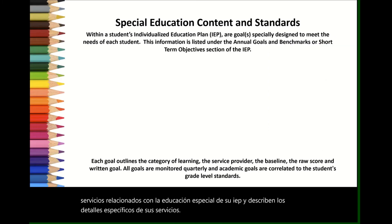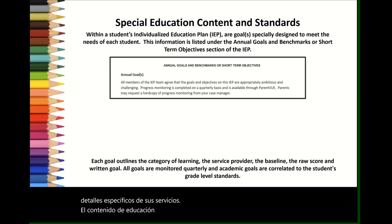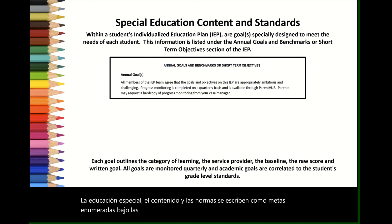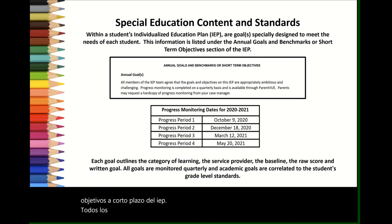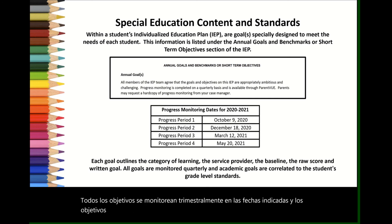The special education content and standards are written as goals listed under the Annual Goals and Benchmarks or Short Term Objectives section of the IEP. All goals are monitored quarterly on the dates listed, and academic goals are correlated to the student's grade level standards.